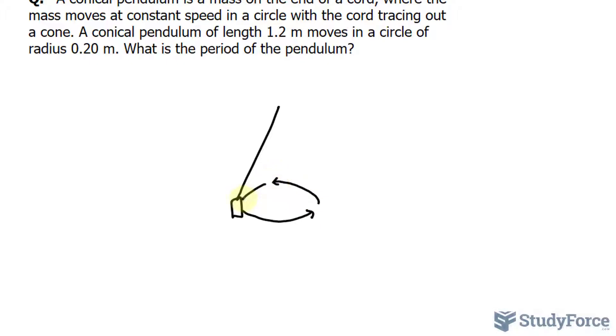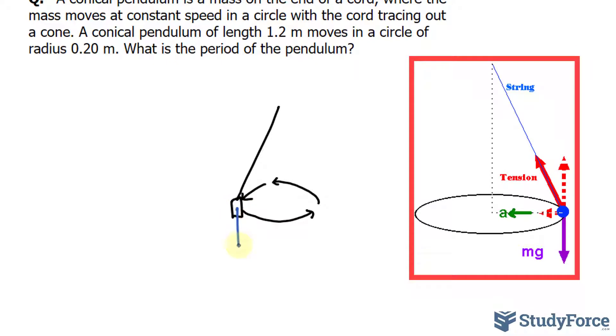So there's centripetal force occurring. Not only is there centripetal force occurring towards the center of the circle, but there's also force due to gravity, and that's directed downwards.